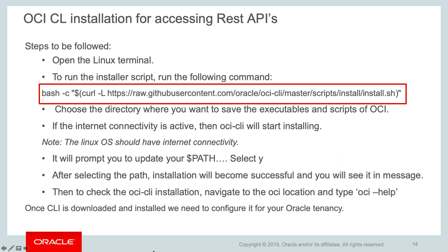To install OCI CLI, open a Linux terminal and run the installer script. You need to choose the directory where you want to save the executables and the script. The machine where you install this must have internet connectivity. Once the connection is available, the installer will start. It will prompt you to update your path — select yes, and installation will complete. To check if OCI CLI installation was successful, type oci help, which will show you the version of the OCI command line installed in your environment.